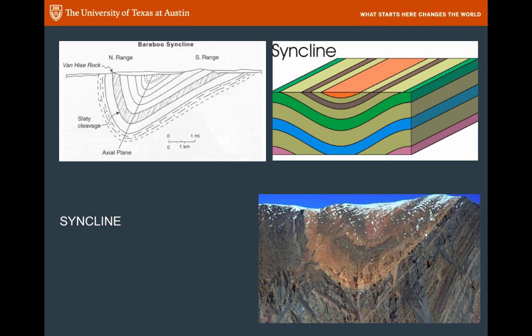The interesting thing about synclines, and the way you can distinguish them, is that the youngest rocks show up in the center of a syncline. If you look at either of the diagrams on the top, where you can really tell the relative ages of the rocks because you know the sequences, you can tell that if you start walking on one side of the syncline and walk all the way across it, you'll cross from older rocks into younger rocks and then back into older rocks again. Whenever you see the same sequence of rocks repeated in the opposite order, think about a fold — and if young is in the center, then it is a syncline.